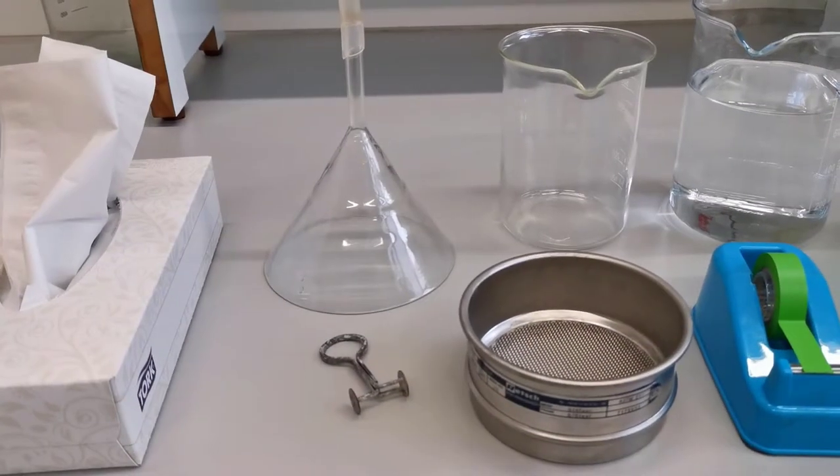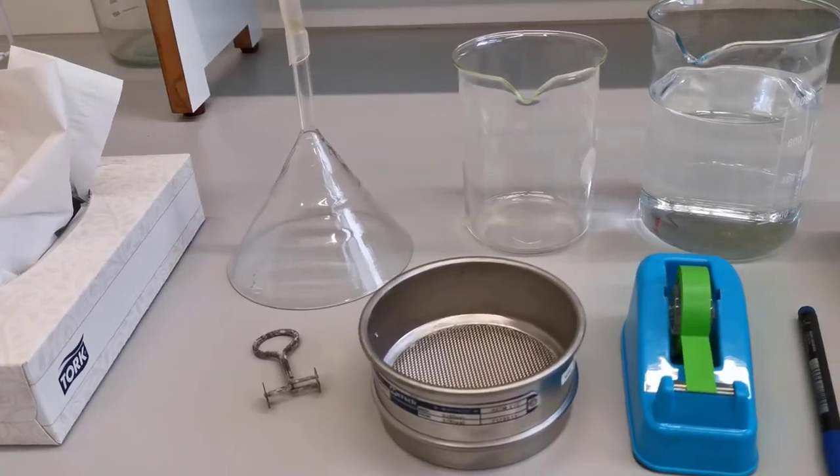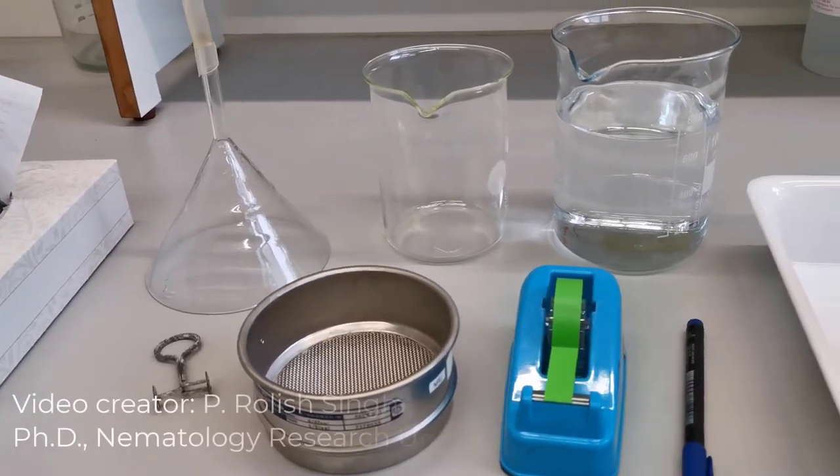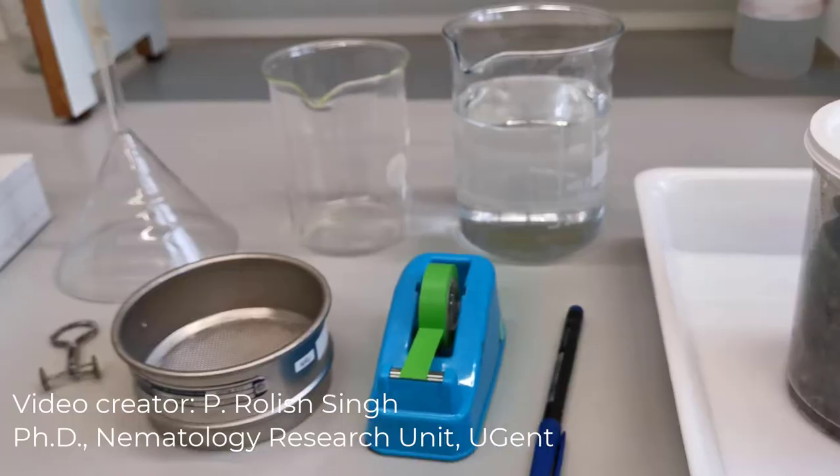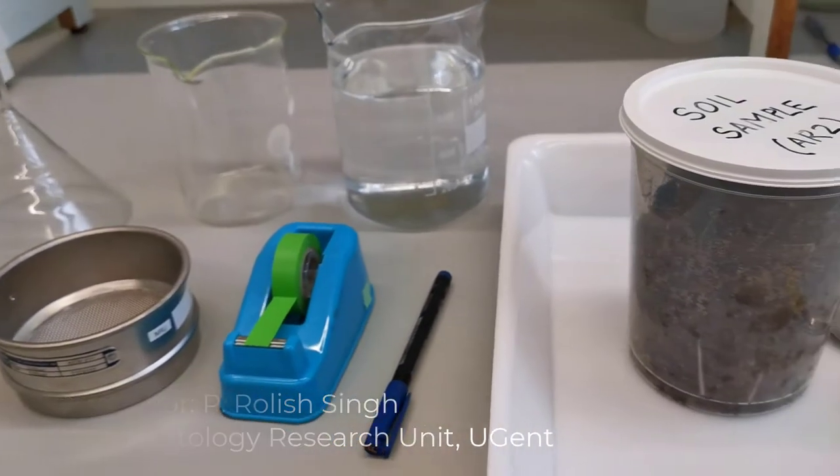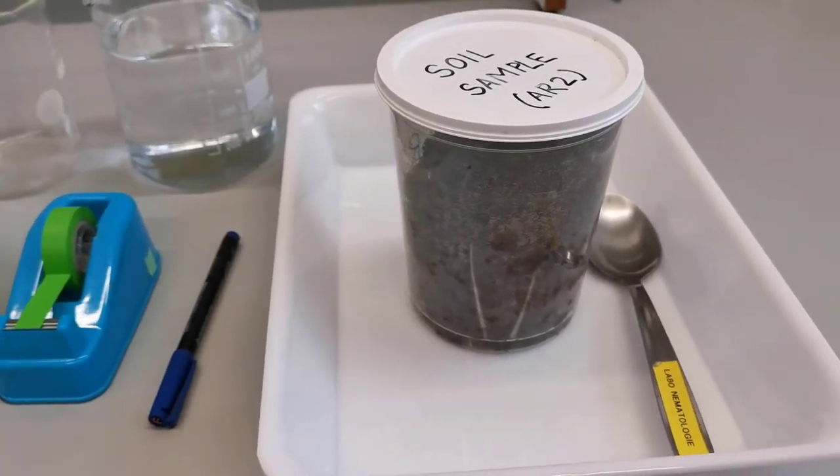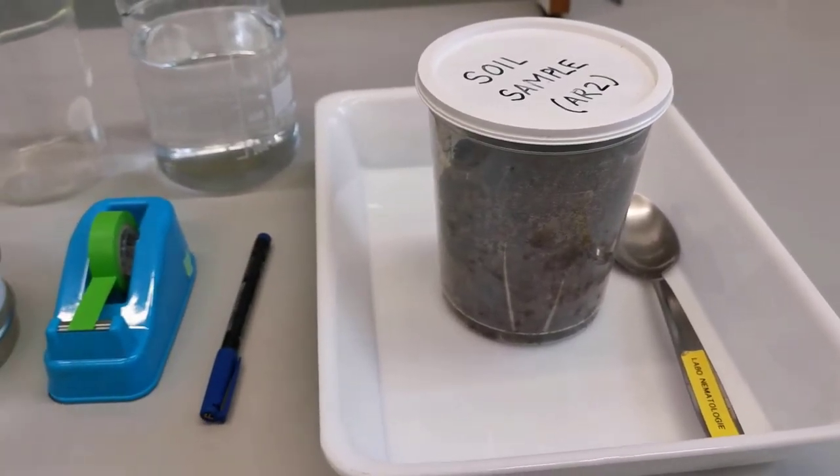Baermann funnel extraction of motile nematodes from soil or plant materials requires a setup of a funnel with rubber tube attached to it, a clamp, a sieve with 850 micrometer mesh size or bigger, tissue paper, some tap water, beakers, leveling materials, etc.